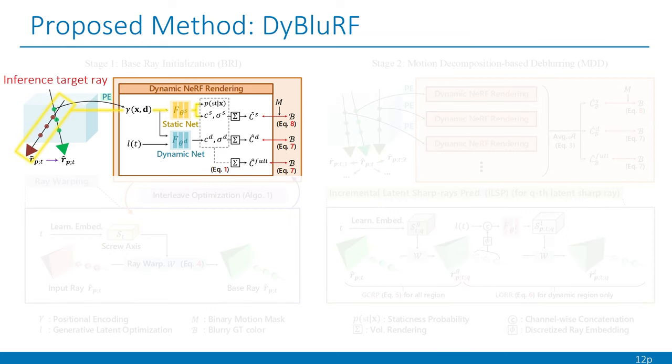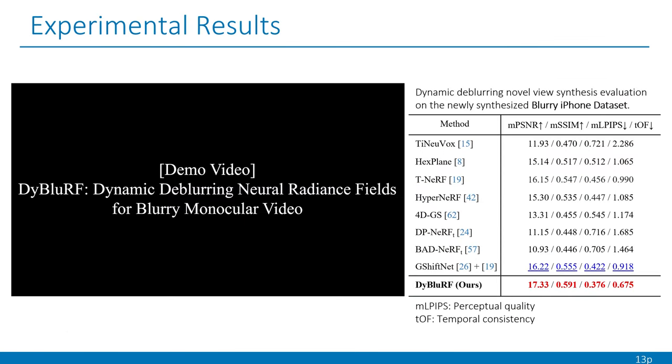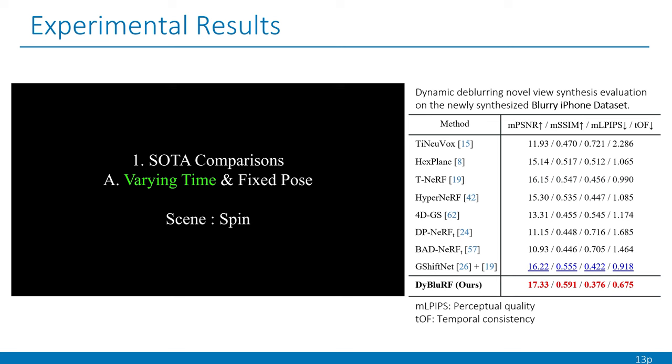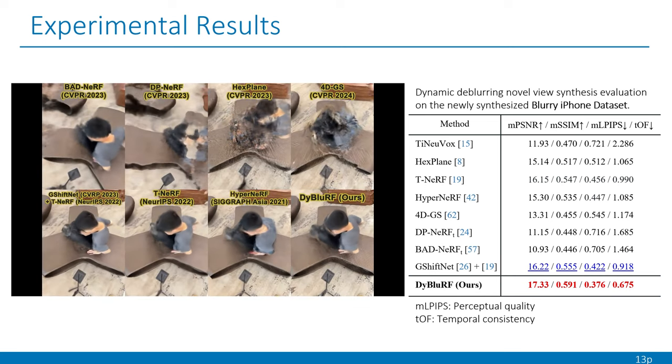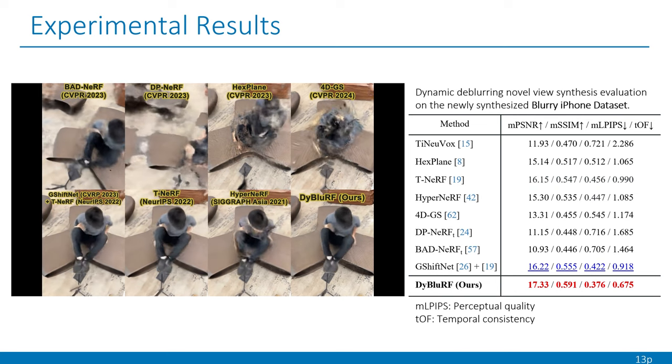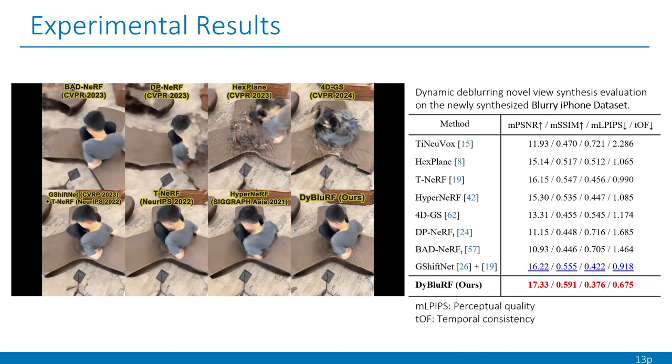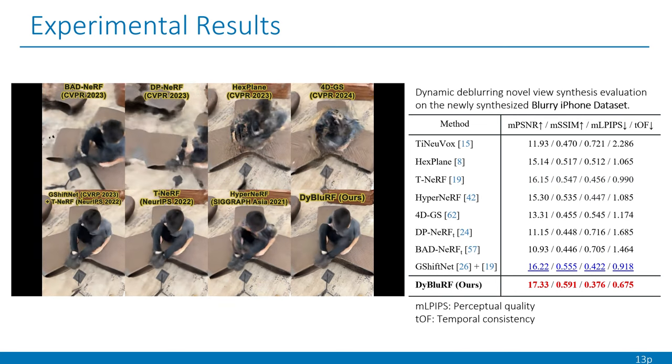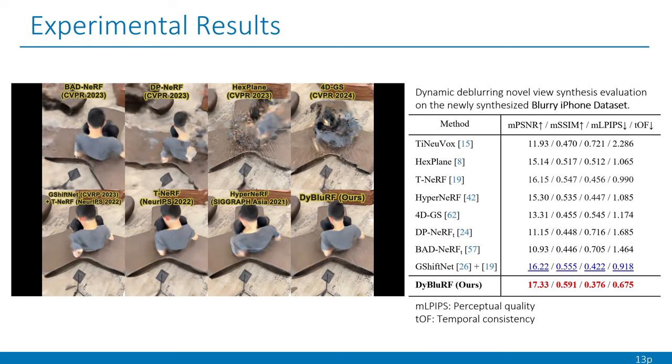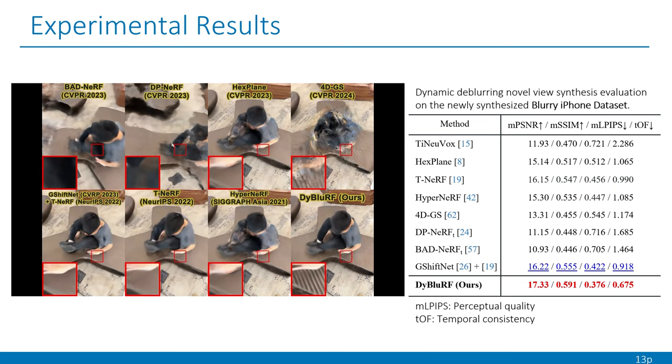In the inference stage, the full color of the inference target ray is synthesized for sharp target novel view. From now on, we will show the experimental results of our DyBluRF by comparing with previous state-of-the-art methods on the newly synthesized blurry iPhone dataset. As shown in the demo video and table, our DyBluRF significantly outperforms the state-of-the-art novel view synthesis methods for various metrics including perceptual quality and temporal consistency.